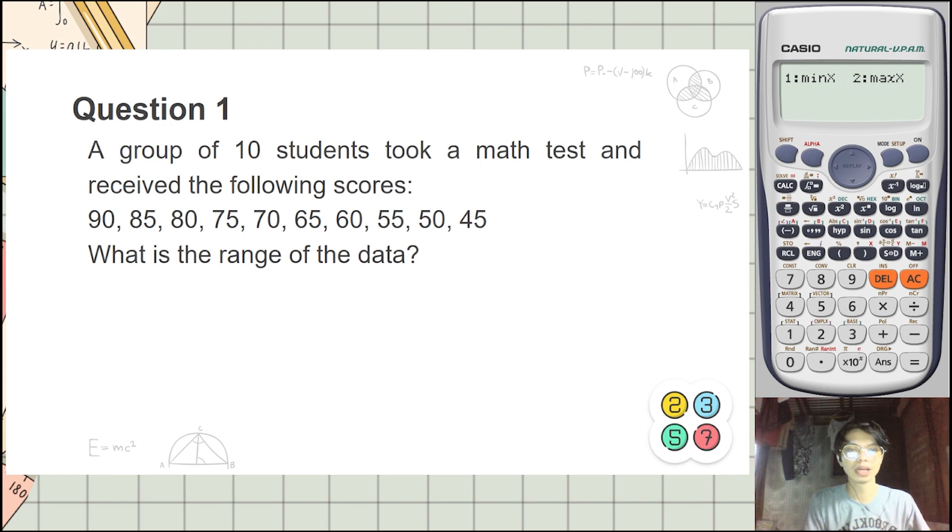So sabi kanina is highest minus lowest. So maximum x, yun yung highest. Minimum x, yun yung lowest. So 2, minus mo ulit, then shift, stat, min max, then min x. Okay, the answer is 45.